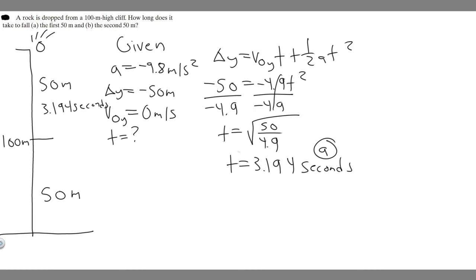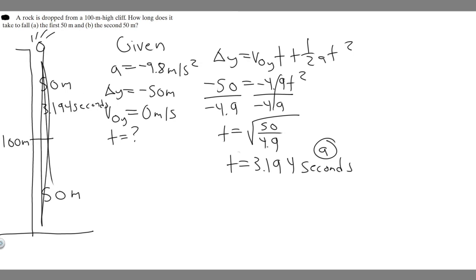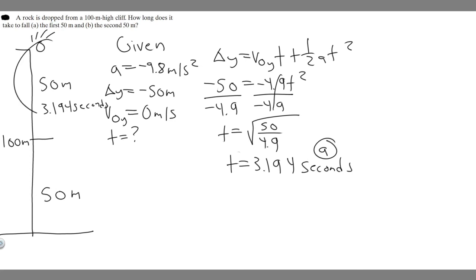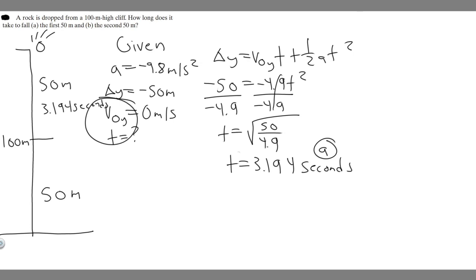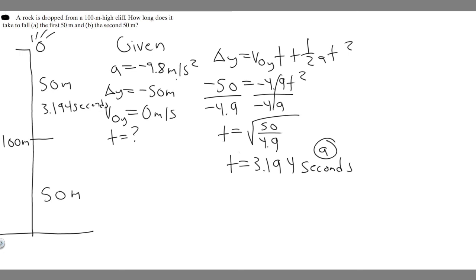Now for part (b) — the second 50 meters. We can't find this distance in isolation, but we can find the total time to fall the full 100 meters and subtract the time for the first 50 meters. Our acceleration is still -9.8, initial velocity is still zero — the only thing changing is delta y, which is now -100 meters.